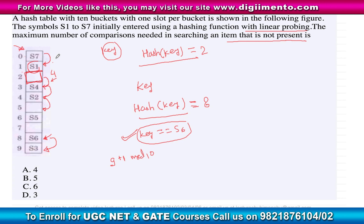After four comparisons, we apply linear probing again and reach slot 2, which is empty. Since it's empty, we compare with the key — that's the fifth comparison. An empty slot confirms the key is not present anywhere in the table, so we stop here with five total comparisons.